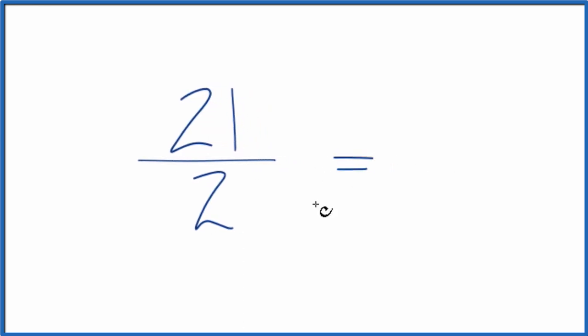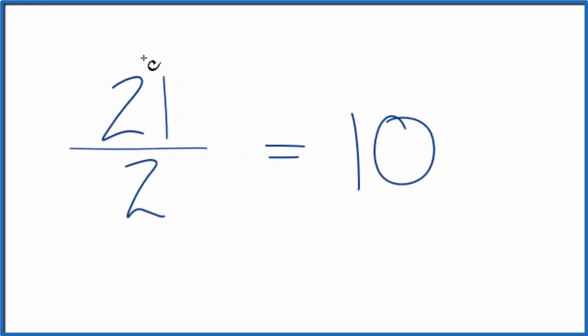So to change it to a mixed number, you would divide 21 by 2. 2 goes into 21 ten times. 10 times 2 is 20. We have one left over. Make that our numerator, and then we bring the denominator across.